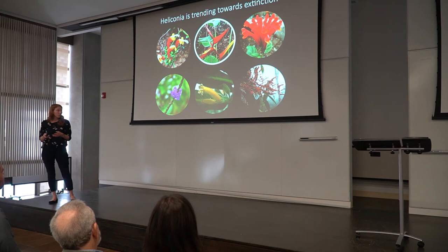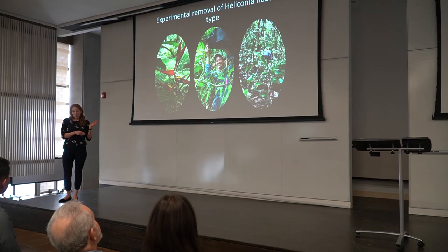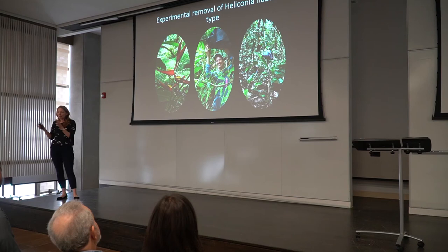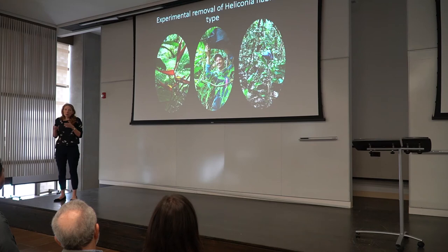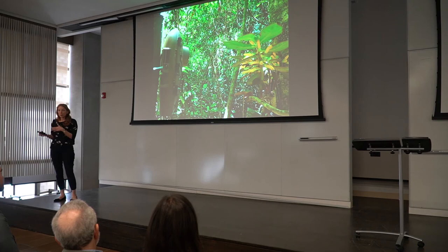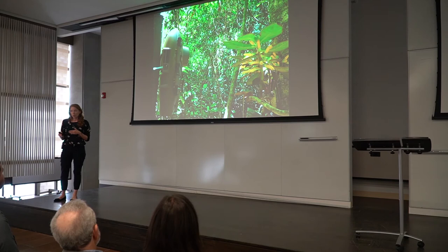Our experiment set up this removal process. Heliconia is a beautiful plant, distinguishable by its red bracts and tiny yellow flowers, and it's roughly four to eight feet tall. In these forest fragments, we went out and covered all of the Heliconia present — you can see my collaborator Caroline Berger doing just that. Following the removal, we also used camera traps pre and post Heliconia removal to record hummingbird visitation, so that we could quantify this change in dispersal.